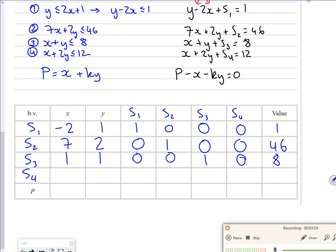That's s4: 1, 2, 0, 0, 0, 1, 12. And then my P line is minus 1, minus k, 0, 0, 0, 0, 0.